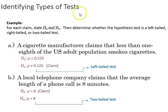This is identifying types of tests. Here's a couple examples, and for each claim we're going to state the null and the alternative to determine whether the hypothesis test is left, right, or two-tailed. So if a cigarette manufacturer claims less than one-eighth of the US population smokes, then we've got one-eighth expressed in decimals, 0.125, and the claim is that it's greater than or equal, and that's the null. The alternative is what we're actually testing in the claim, which is that it's less than 0.125.